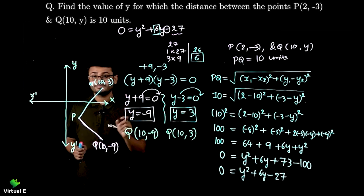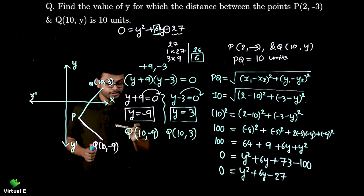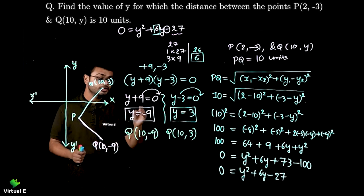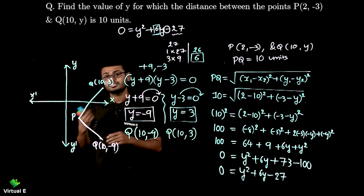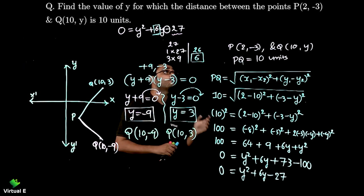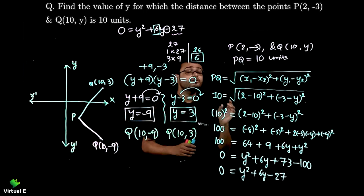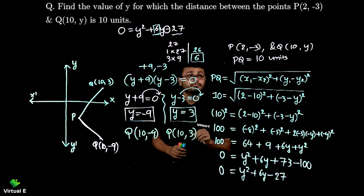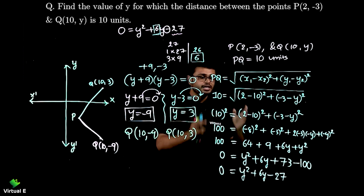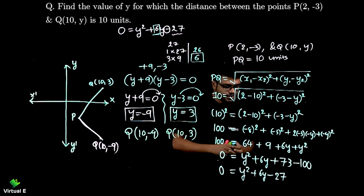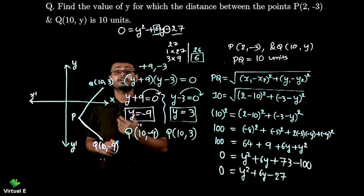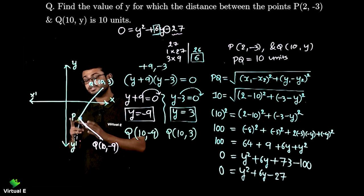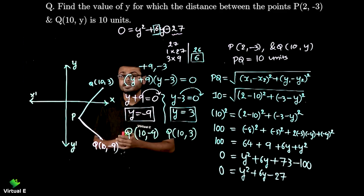Both answers are accepted and we need to mention that value of Q can be (10, -9) or (10, 3). Let's repeat the step first of all. Here two points are already given along with the distance between them. But what is missing? One coordinate. So use the distance formula, square for the proper simplification. Simplify, get the quadratic equation, solve it and get your answer. Remember this figure is only for the purpose of understanding.